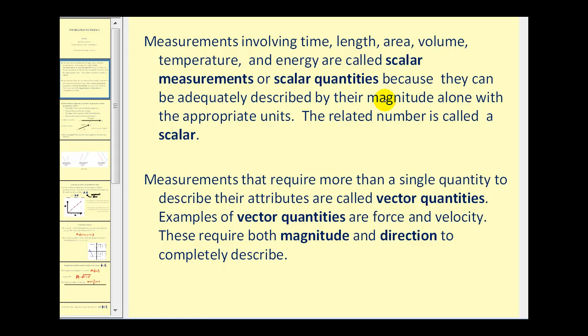The related number is called a scalar. For example, when we talk about the temperature outside, if it's 85 degrees, that's enough information to describe how warm it is outside.